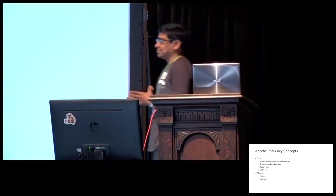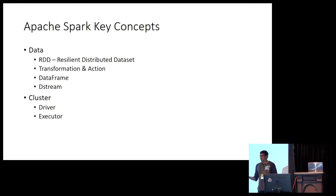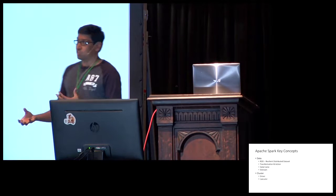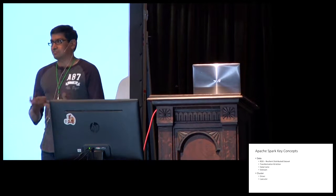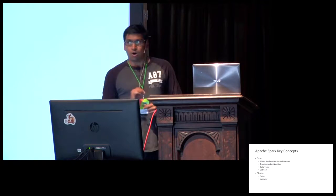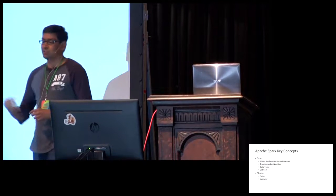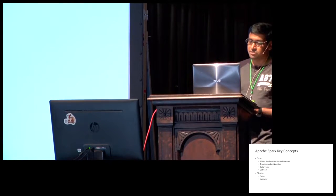There are two other things to understand: transformations and actions. Transformations are all the operations to be performed on the distributed dataset. They are lazy — when a transformation is defined on an RDD, nothing actually happens to the data. It just gets appended to the execution graph. When an action is called on the RDD, that's when all the pipelined transformations execute. We'll see examples of both shortly.